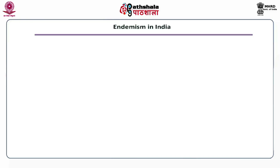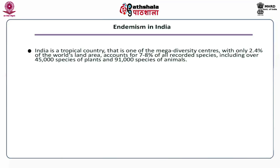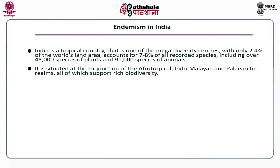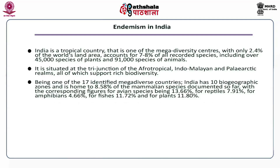India is a tropical country and one of the mega diversity centers. With only 2.4 percent of the world's land area, India accounts for 7 to 8 percent of all recorded species, including over 45,000 species of plants and 91,000 species of animals. It is situated at the trijunction of the Afrotropical, Indomalayan and Palaearctic realms, all of which support rich biodiversity. Being one of the 17 identified mega diversity countries, India has 10 biogeographic zones and is home to 8.5 percent of the mammalian species documented so far.